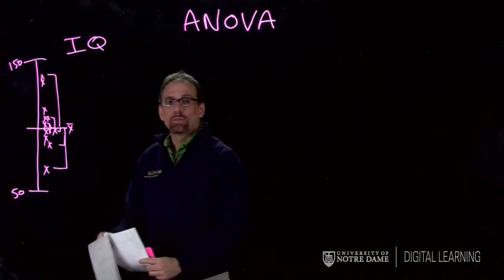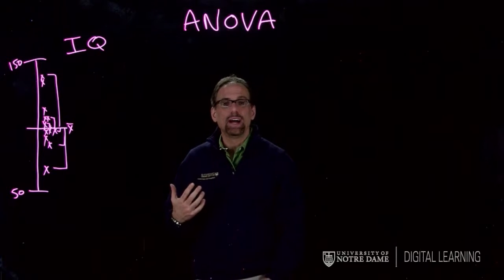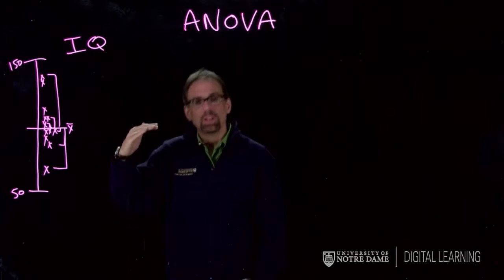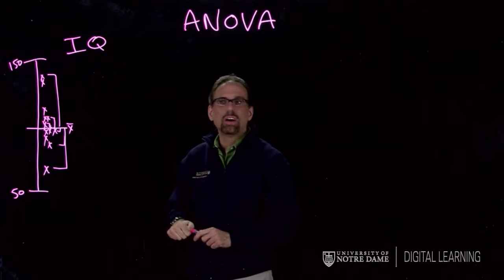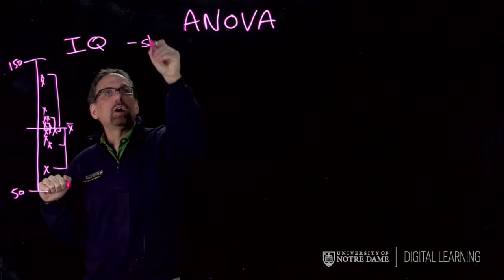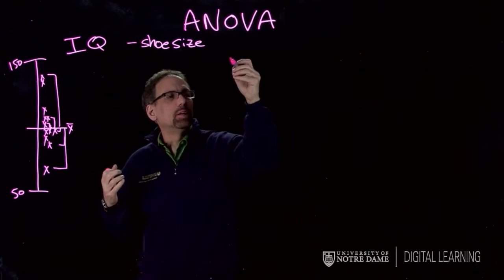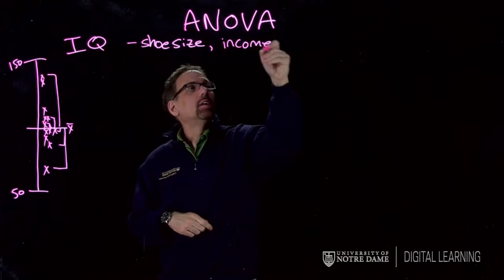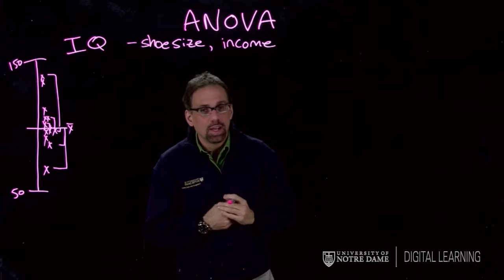So what I want you to do is just think about three things that might be related to IQ. What might be related to IQ? Let's think of something that we think actually would not be related, something that we think might be somewhat related to IQ, and then something that we think would be very highly related to IQ. So those three things are, just for the sake of our example, let's say unrelated would be shoe size. So we might not expect shoe size to actually have any relationship with IQ. That would just kind of be random. Something that would be somewhat connected to it would be income.